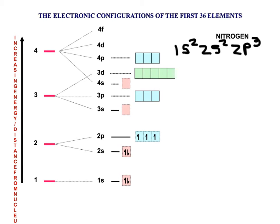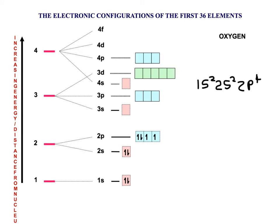Nitrogen has 7 electrons; the configuration is 1S² 2S² 2P³. Oxygen has an extra electron — since all three 2P orbitals are each filled with one, it has to pair up in one of them, drawn with an arrow going in the opposite direction. The reason electrons need opposite spin is that spinning in opposite directions allows them to get closer, reducing repulsion between the two negatively charged particles.